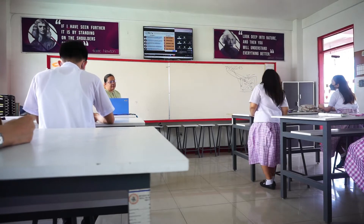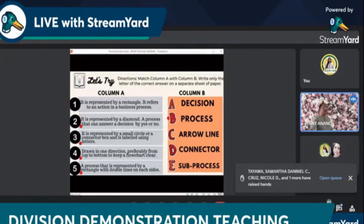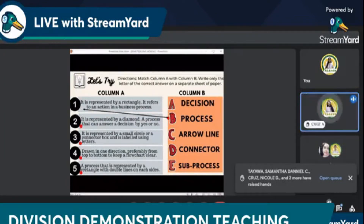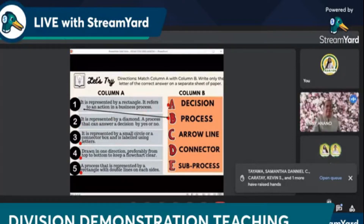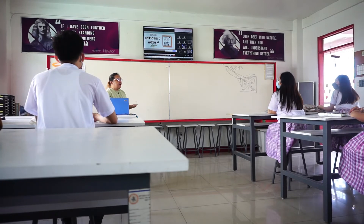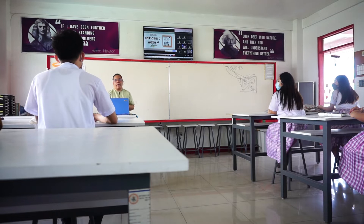Number one — very good, that is 'process,' clap your hands! For number two in Google Meet, Nicole answered: it is represented by a diamond, a process that can answer a decision by yes or no. Number two is letter A — 'decision.' Very good! Now let's welcome our ICT CSS Grade 7 Week 4 topic: interpreting and knowing the different technical drawings, particularly flowcharts.